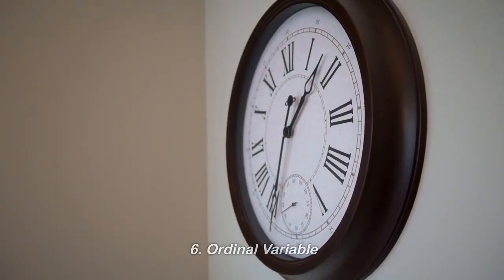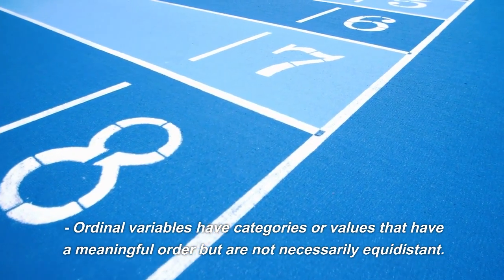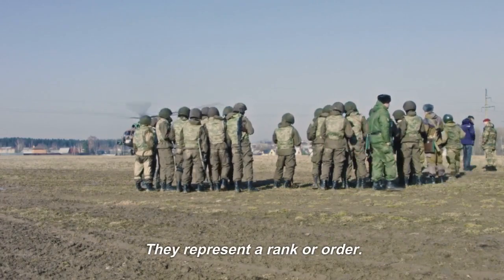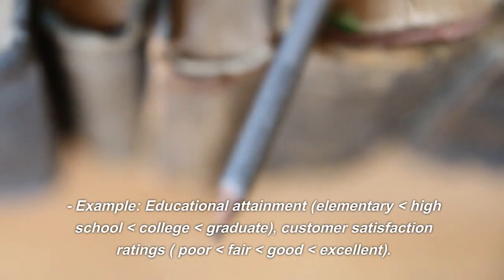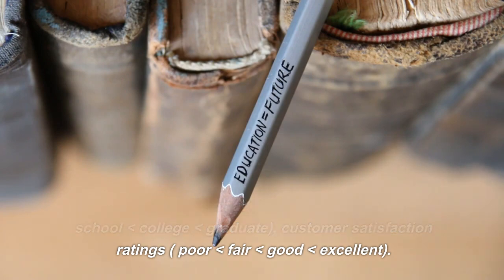Ordinal variable. Ordinal variables have categories or values that have a meaningful order but are not necessarily equidistant. They represent a rank or order. Example: Educational attainment (elementary less than high school less than college less than graduate), customer satisfaction ratings (poor less than fair less than good less than excellent).